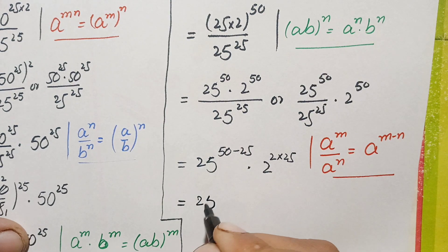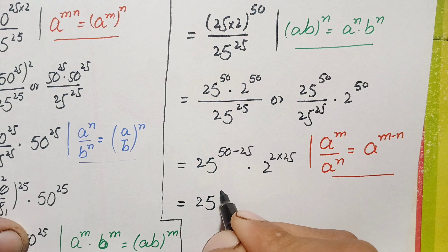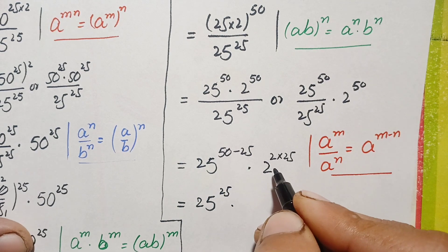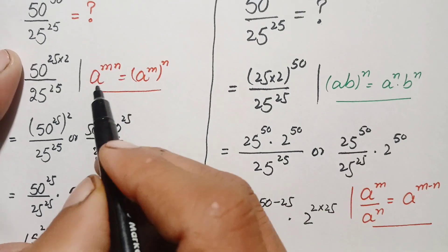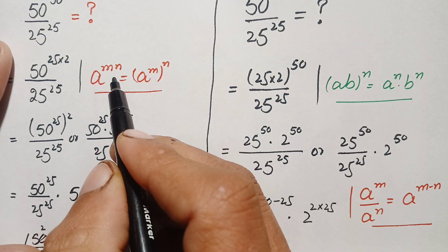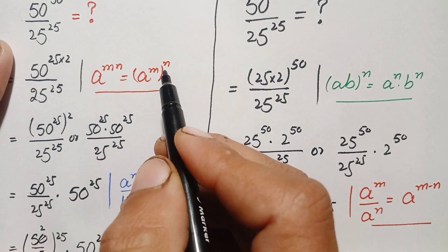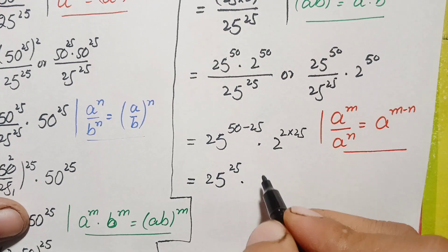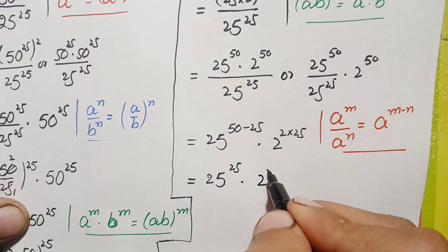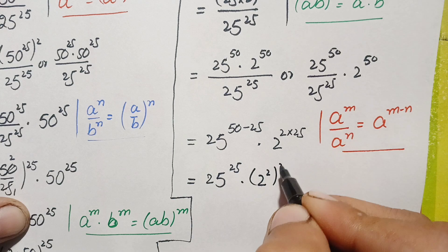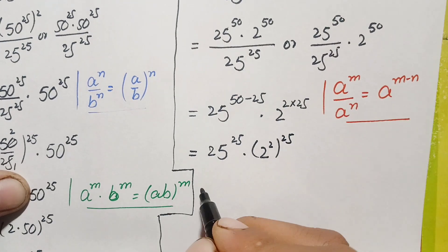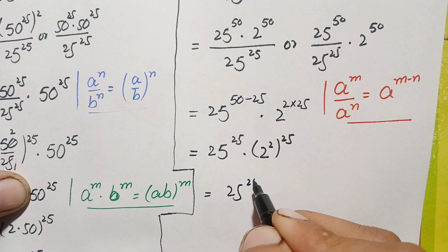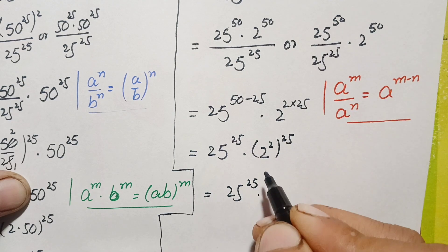50 minus 25 is 25, so we have 25 raised to power 25, times 2 raised to power 50. We can write 50 as 2 times 25. Using the identity a raised to power m times n equals a raised to power m, whole raised to power n, we get 2 raised to power 2, whole raised to power 25, which is 4 raised to power 25.